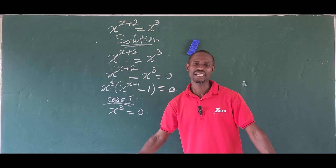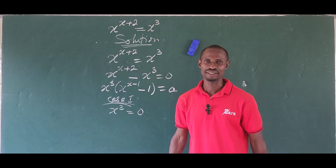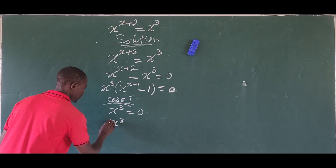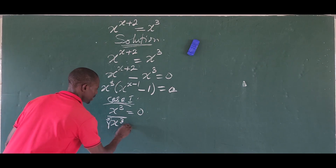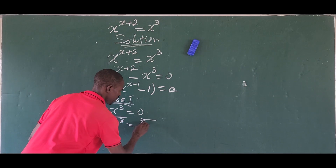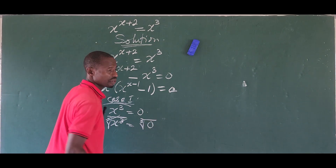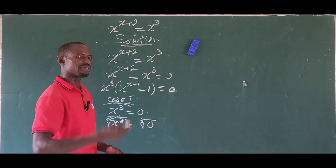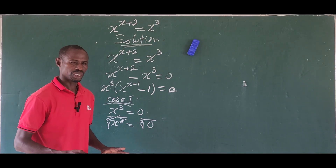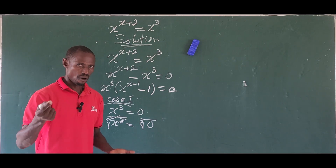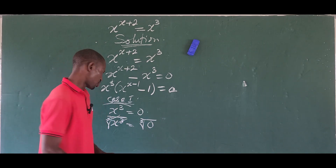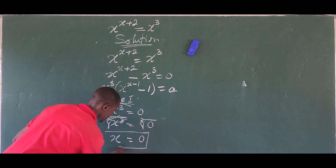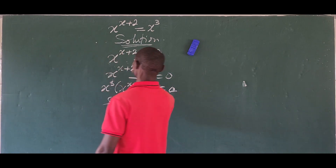To solve x to the power of 3 equals 0, we take the cube root of both sides. The cube root of x cubed equals the cube root of 0. Since 0 to the power of any number gives us 0, we get x equals 0. This is our first value from this challenge.